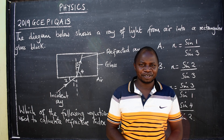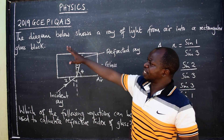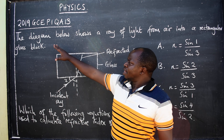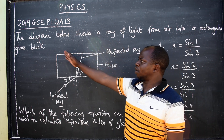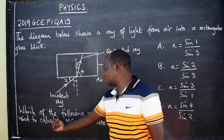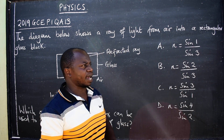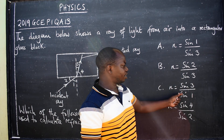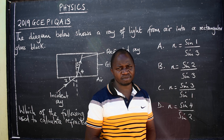Greetings ladies and gentlemen, this is physics. In this presentation we want to look at this question from 2019 GCE paper 1, question A13 — this is 5124 physics. The diagram below shows a ray of light from air into a rectangular glass block. The question asks which of the following equations can be used to calculate refractive index of glass. Options: A) n = sin1/sin3, B) n = sin2/sin3, C) n = sin3/sin1, D) n = sin4/sin2.